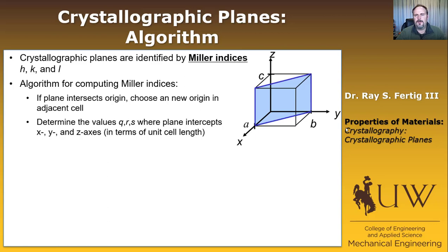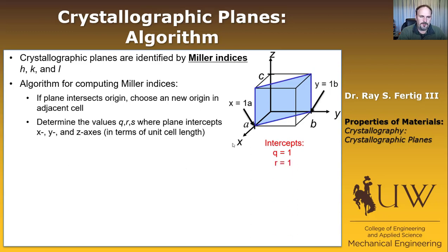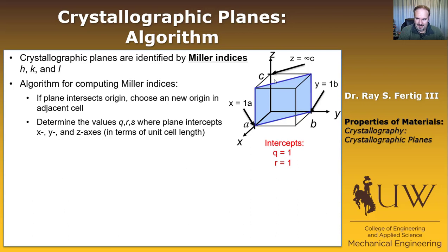Step two is to determine the values Q, R, S where the plane intercepts the x, y, and z axes, in terms of the unit cell length. The plane intersects the x-axis at value a, so Q equals one. It intersects the y-axis at b, so R equals one. This plane runs up forever and never intersects the z-axis, so the intercept is at infinity and S equals infinity.